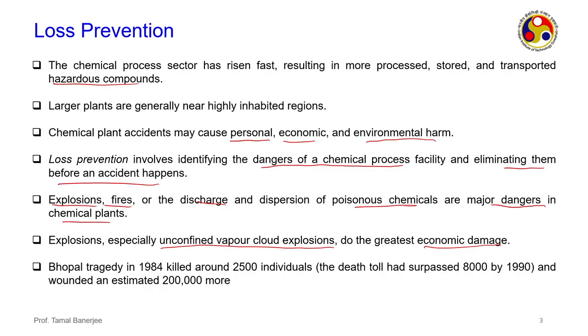The Bhopal gas tragedy occurred in 1984 and killed around 2,500 — though unconfirmed media reports say more than 50,000, with over 20,000 wounded. It made a permanent scar: birth deformity, cancers, genetic disorders, and blindness persist in all victims to this day. It happened during winter, so the temperature of the air was not high, and dispersion of gases stayed close to the ground, unable to escape to the atmosphere — making the damage acute.